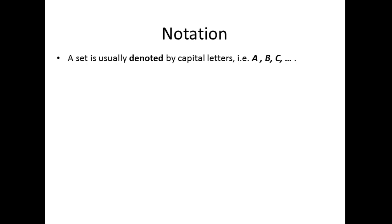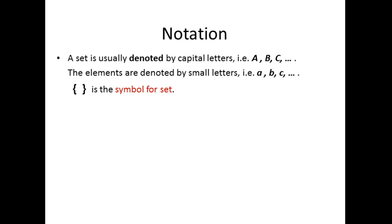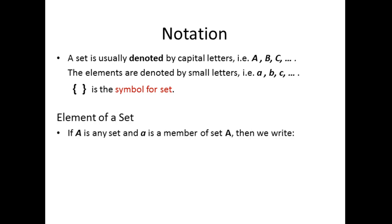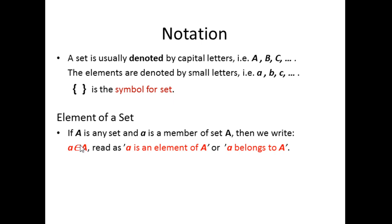A set is usually denoted by capital letters, and the elements or members of a set are denoted by small letters — small letter a, small letter b, small letter c, and so on. The curly brackets symbolize a set. If capital letter A is any set and small letter a is a member of set A, then we write it as: a is an element of A. We can also read it as 'a belongs to A,' meaning you can find small letter a inside set A.